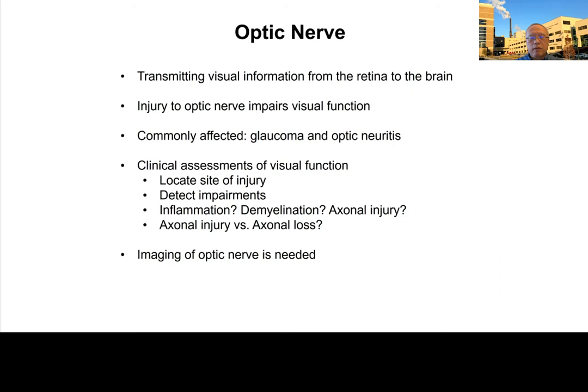A clinical assessment of visual function is convenient and very useful — you can locate the site of injury and detect impairment of vision — but it has a problem: it cannot determine whether the injury is inflammation, demyelination, or axonal injury. And it is very difficult to determine if it is a reversible or irreversible axonal loss.